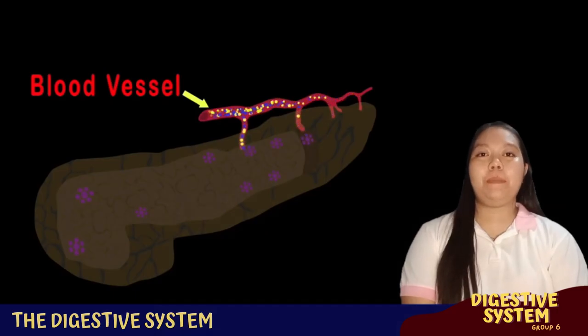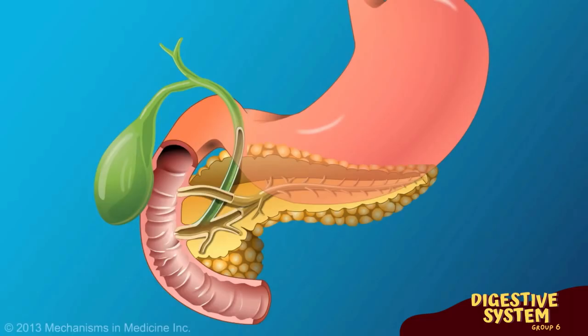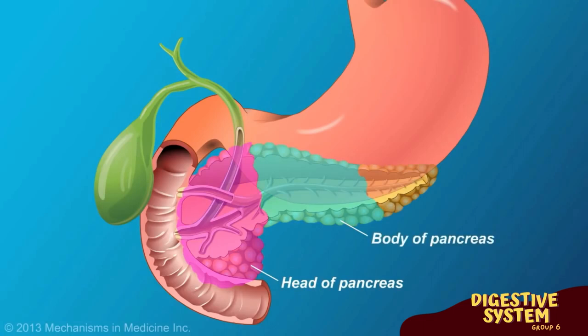These hormones help regulate appetite and blood sugar levels, among others. The pancreas has three main parts: the head, which is the widest part found on the right side of the abdomen nestled in the C-curve of the duodenum; the body, which is the largest part located between the tail and neck; and the tail, located on the left side of the abdomen in close proximity to the spleen.